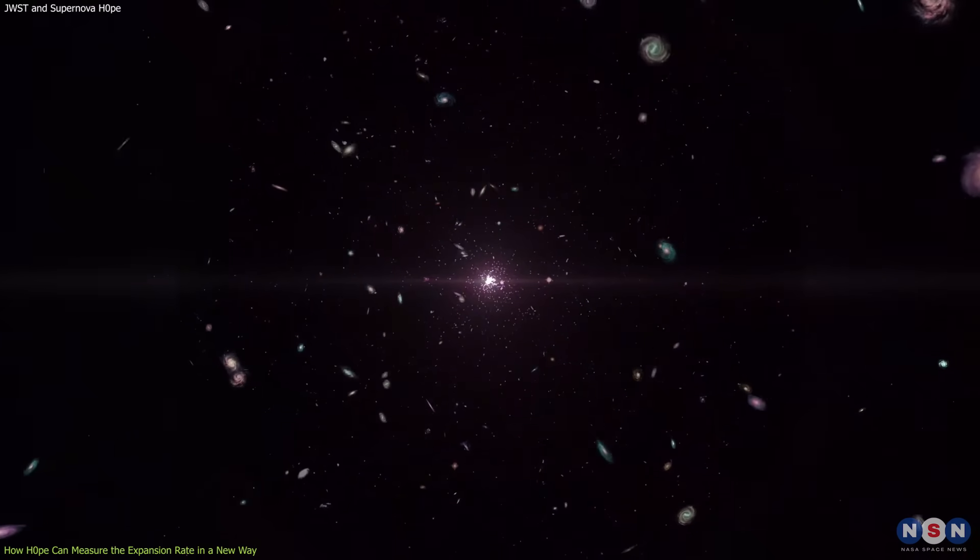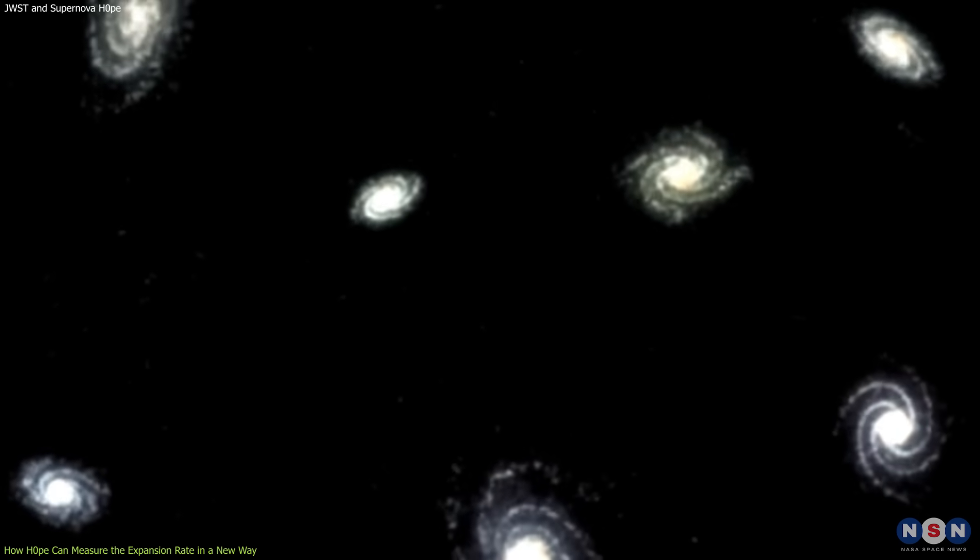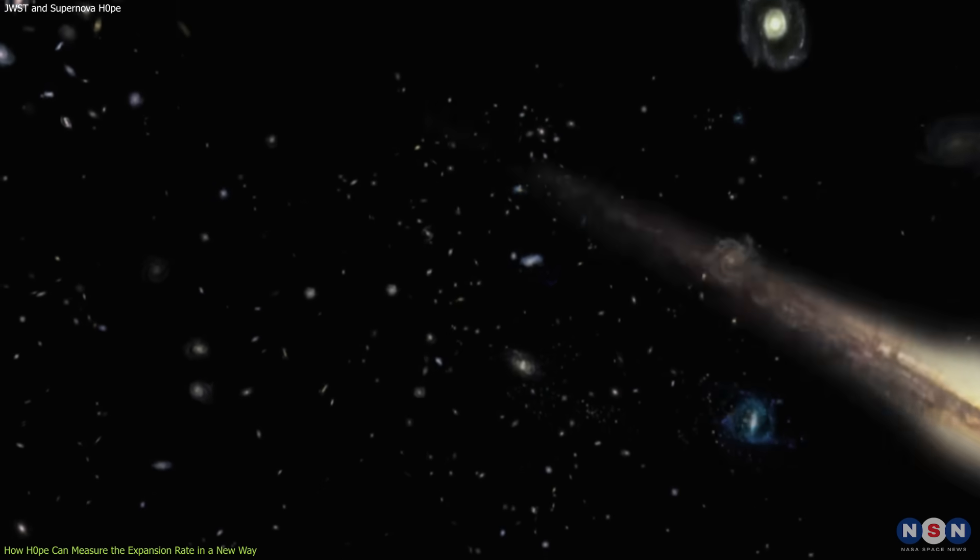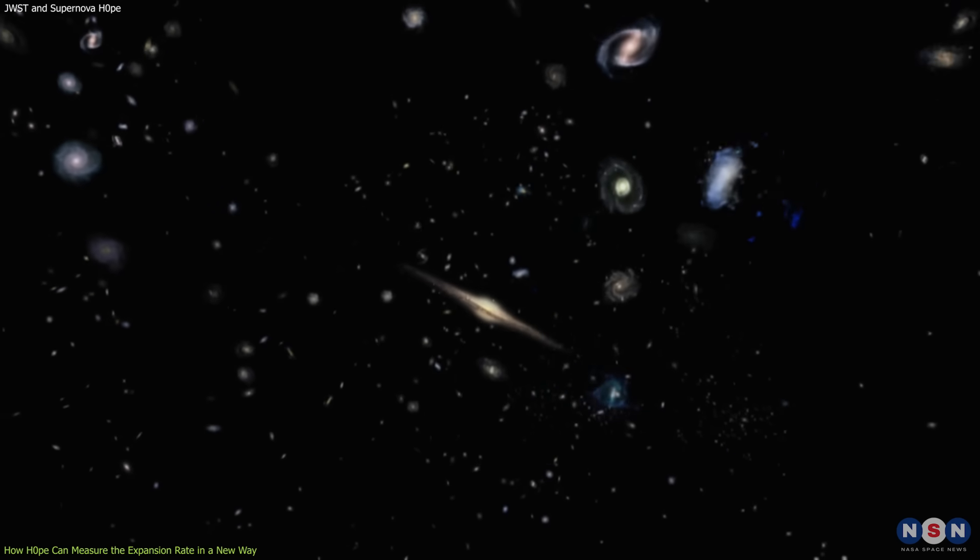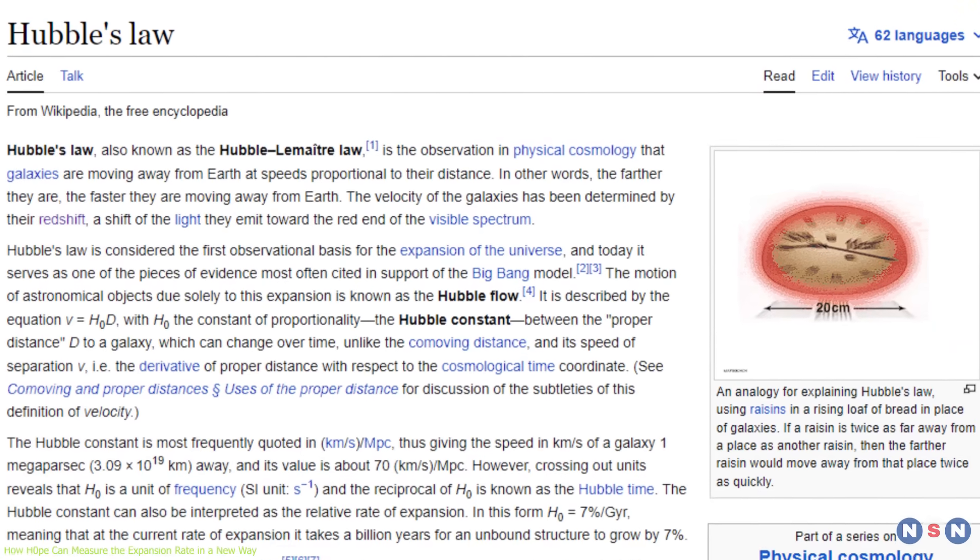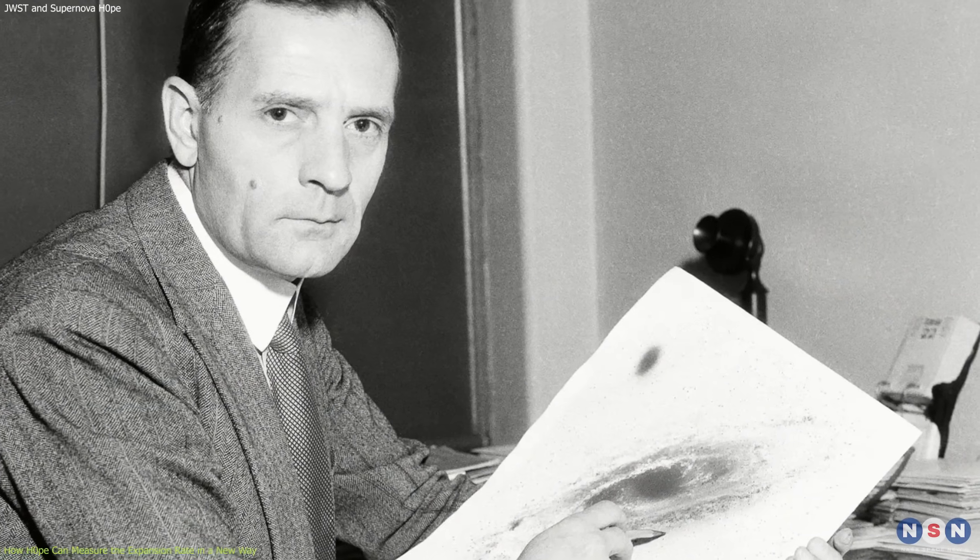As you may know, our universe is not static but expanding. This means that distant galaxies are moving away from us at a certain speed that depends on their distance from us. The farther away they are, the faster they move away from us. This relationship between distance and speed is known as Hubble's law, named after Edwin Hubble, who discovered it in 1929.